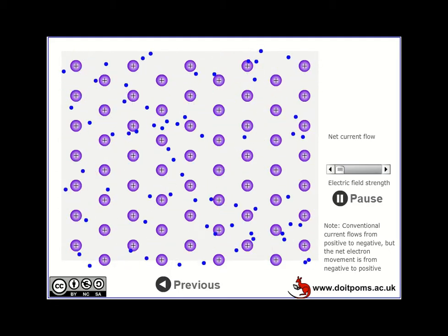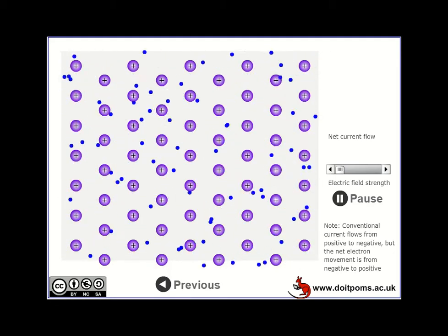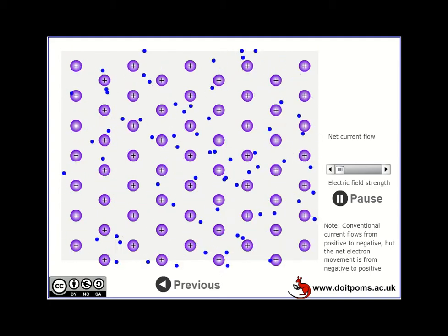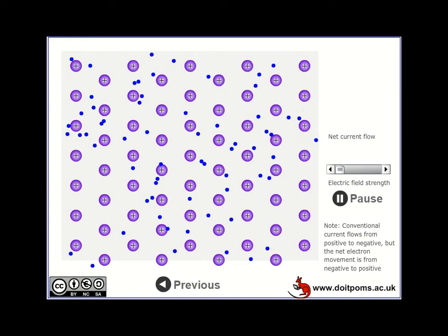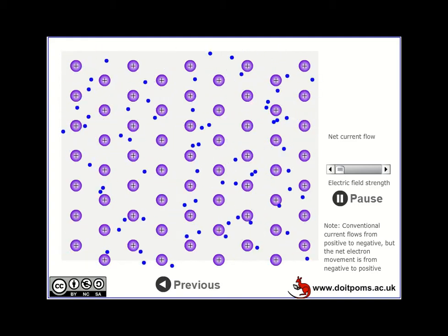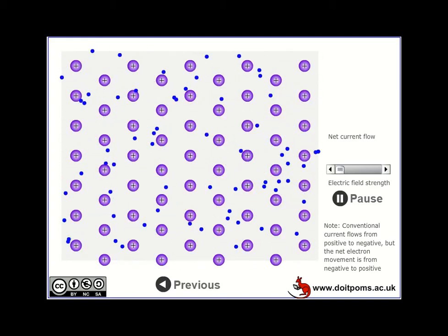That's what this animation is showing. Here you can see the little blue electrons bouncing around at random, and they're free to flow through the material. You've got the fixed atomic cores that you can see here in purple.